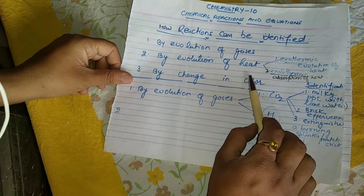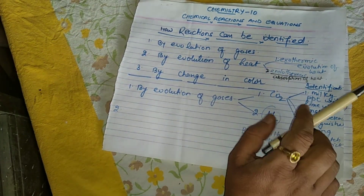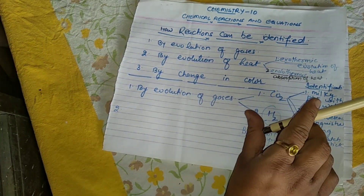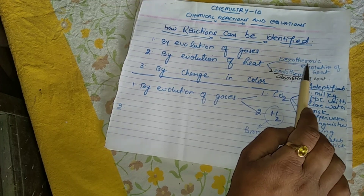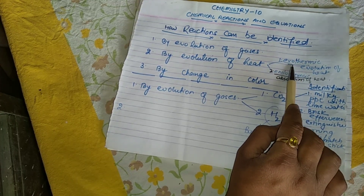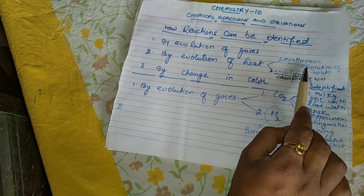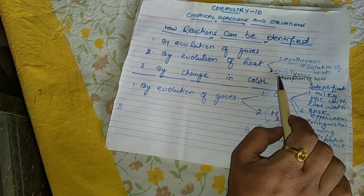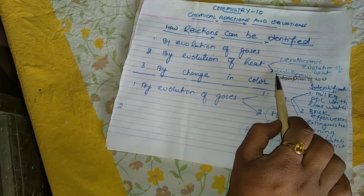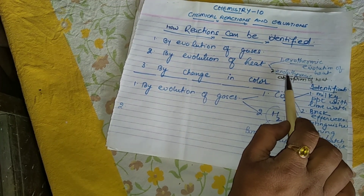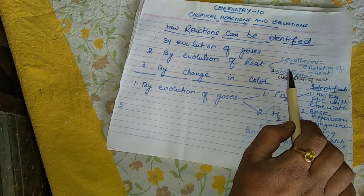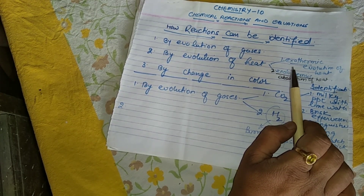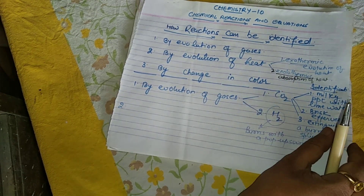The second way to identify a chemical reaction is by evolution of heat. As mentioned earlier, a chemical reaction can proceed either by evolution of heat — that reaction is known as an exothermic reaction, and the test tube will get heated up — or by absorption of heat, known as an endothermic reaction, in which the test tube will feel cool on touching.